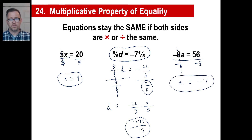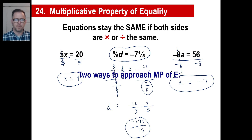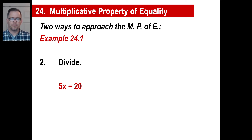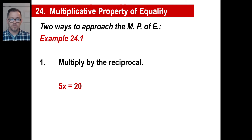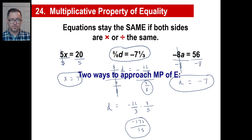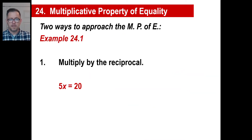Do one thing to one side of an equation, do exactly the same thing to the other side of an equation. What we did before was to divide. Let's look at multiplying by the reciprocal — that's another way of doing this. When we did 5x equals 20, we just divided both sides by 5. The other way to do this is to multiply by the reciprocal.